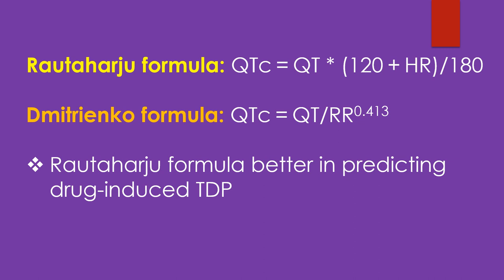The Rotharju formula: QTC = QT × (120 + heart rate) / 180. The Mitriyango formula: QTC = QT / RR^0.413.